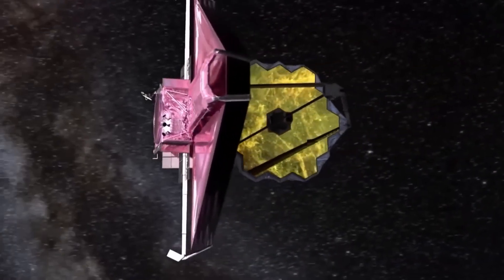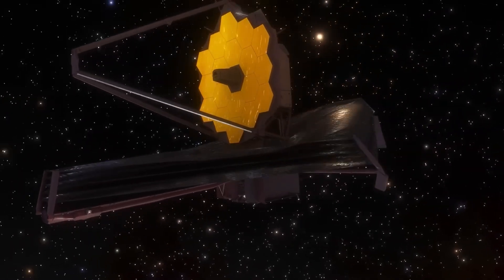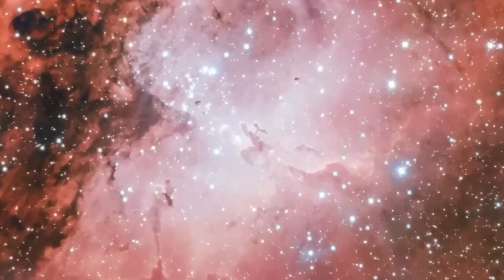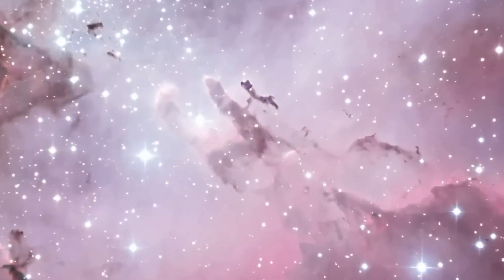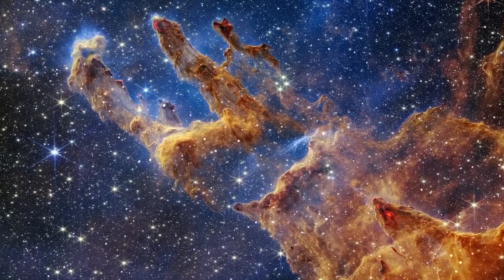The James Webb telescope has provided new insights into one of the universe's greatest mysteries: dark matter. By observing gravitational lensing, where massive clusters bend light from objects behind them, Webb has created a detailed map of dark matter distribution.